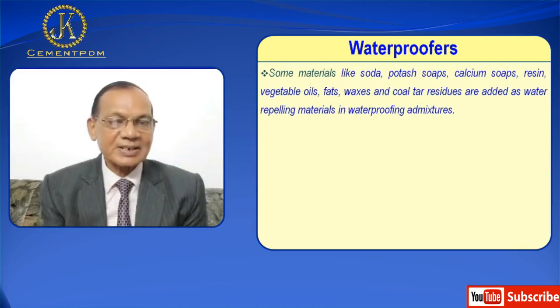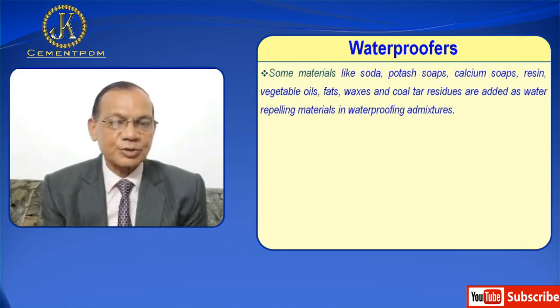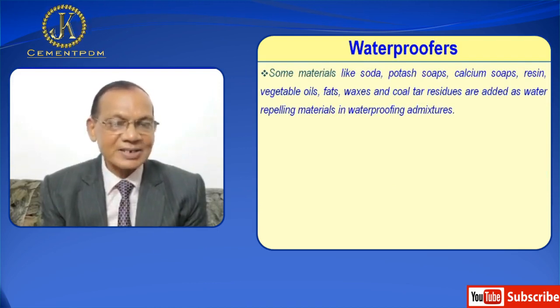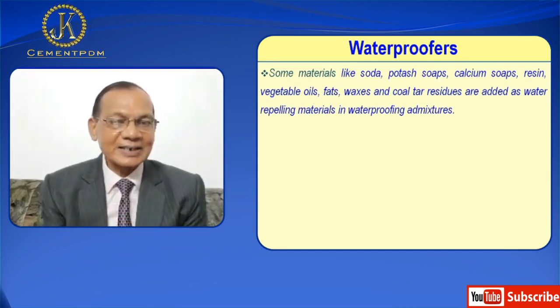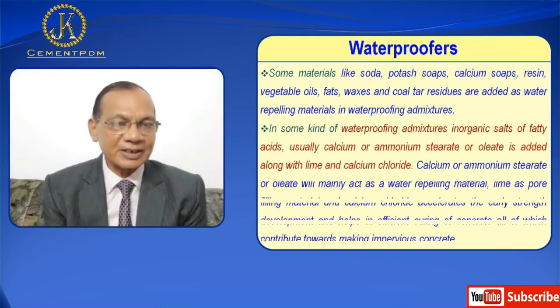Some materials like soda soaps, potash soaps, calcium soaps, resins, vegetable oils, fats, waxes, and coal tar residue are added as water repellent materials in waterproofing admixtures.